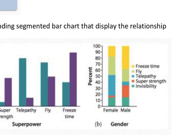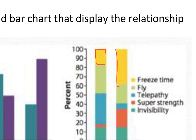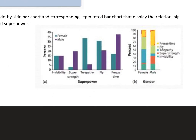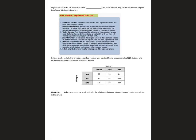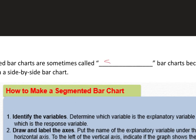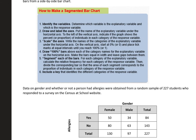A segmented bar graph is new — it breaks the bar down into segments (like male or female) and always adds up to 100%, so the y-axis always goes up to 100. We color code or create a key. For example, for 'freeze time,' you can clearly see that males think it's a cooler superpower than females do and start drawing conclusions. These are also called stacked bar charts because the segments are stacked on top of each other. Make sure to label and scale your axes up to 100 and include a key.